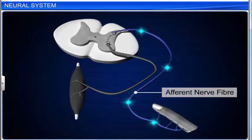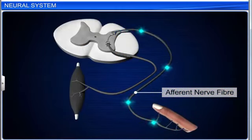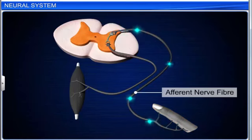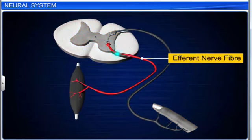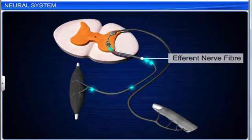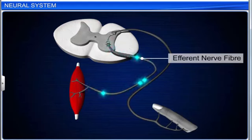Afferent fibers conduct nerve impulses from the sense organs to the central nervous system. Efferent fibers conduct nerve impulses from the central nervous system to the involuntary organs, muscles, and glands.